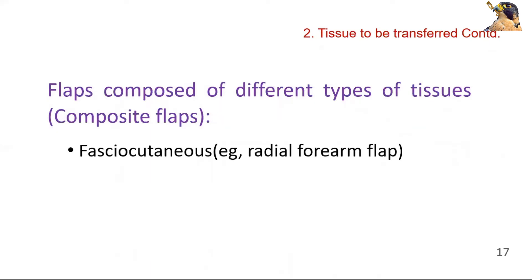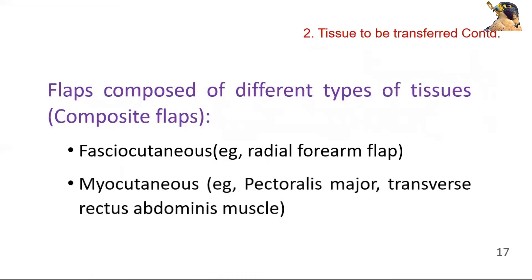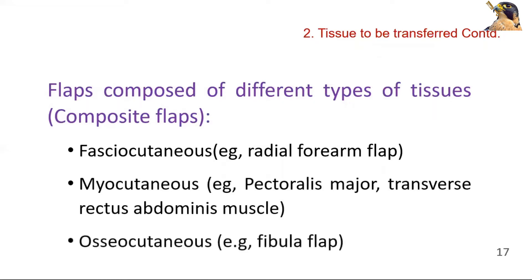Examples of composite flaps include: fascio-cutaneous, such as the radial forearm flap; myocutaneous, such as the pectoralis major flap; and osteocutaneous, such as the fibular flap.